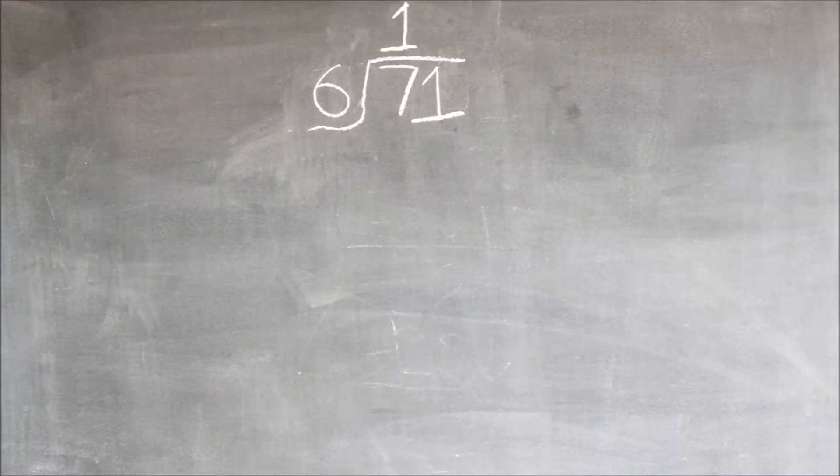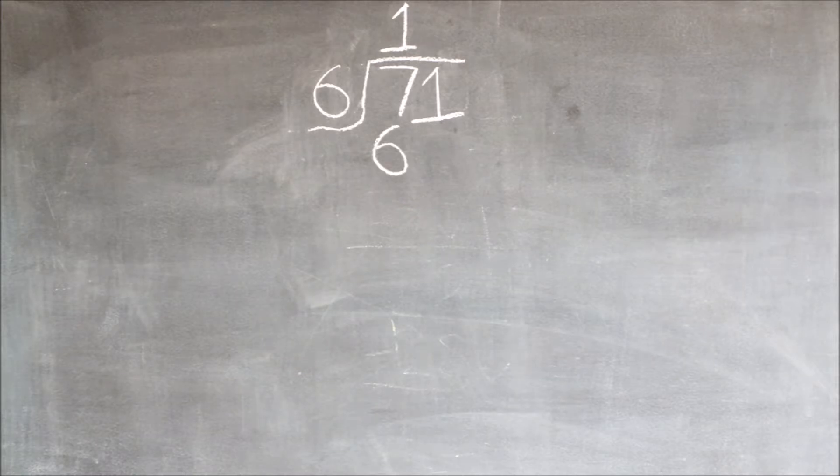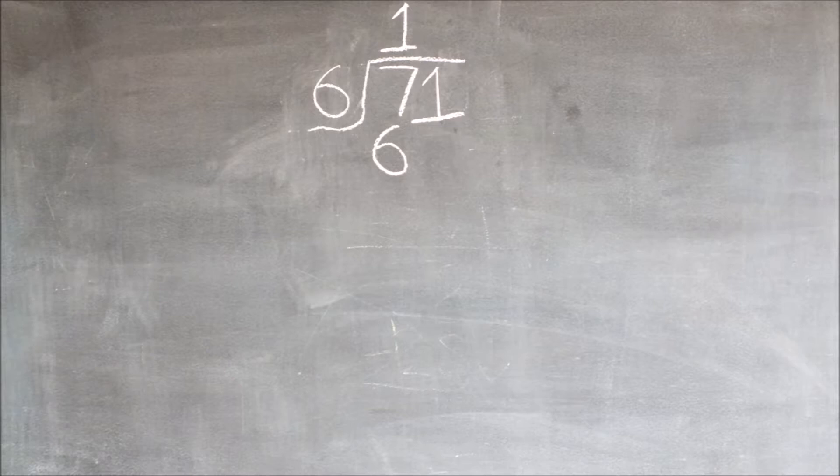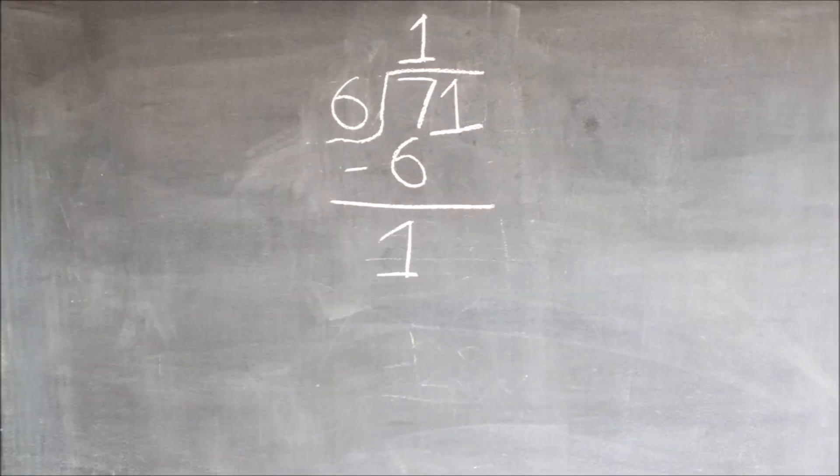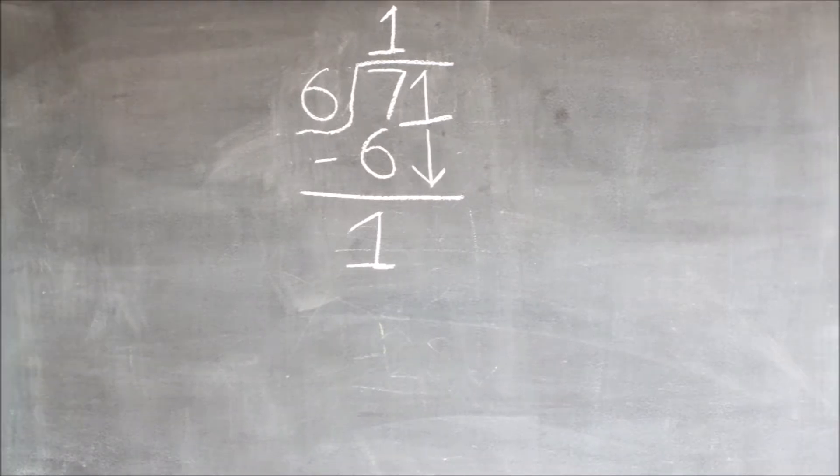Six goes into seven only once. One times six equals six, and we write it under the seven, and then we subtract them. Seven minus six equals one. We then have to bring down the one.